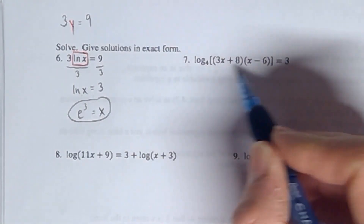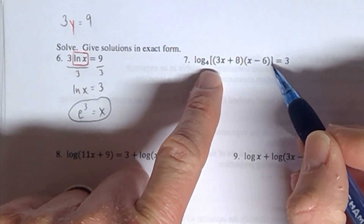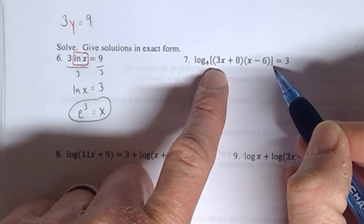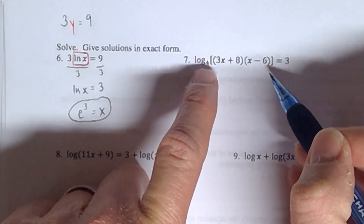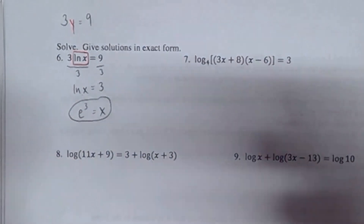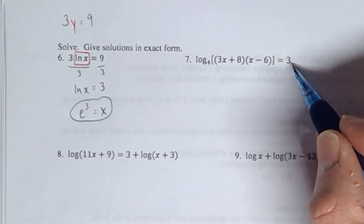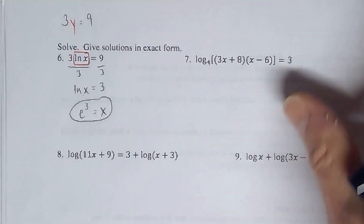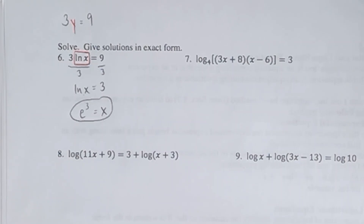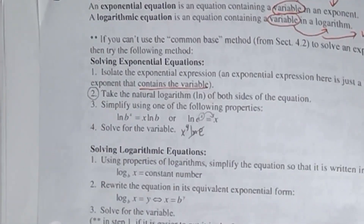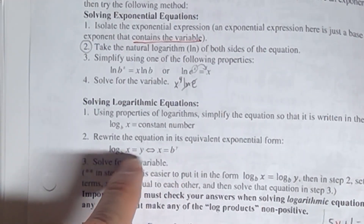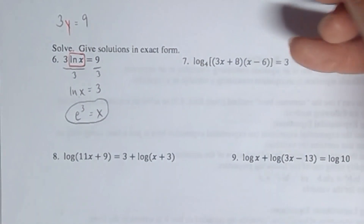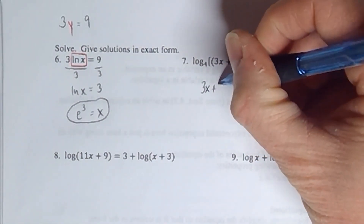The next problem has a log by itself with a very large product term, but because of the square brackets next to the base of 4, that entire square bracket is the product term. The entire left side is just the log, its base, and its product term. The right side is a constant with no variable, so we can move on to the second step: take the base and the exponent together, and the product term is by itself.